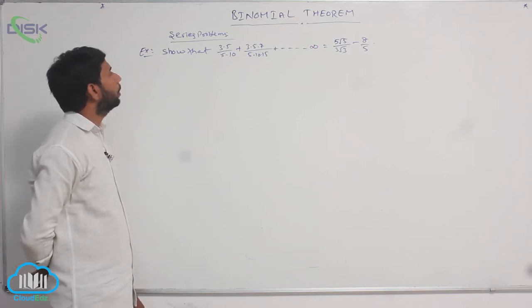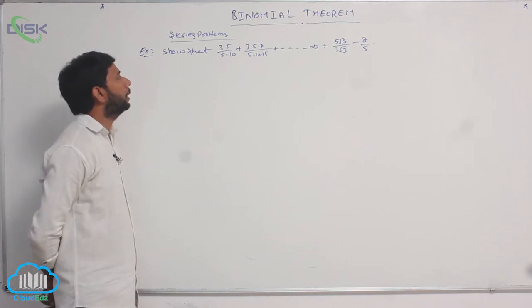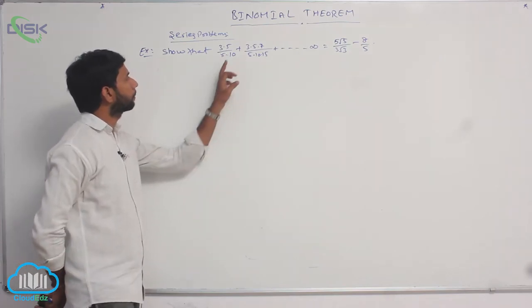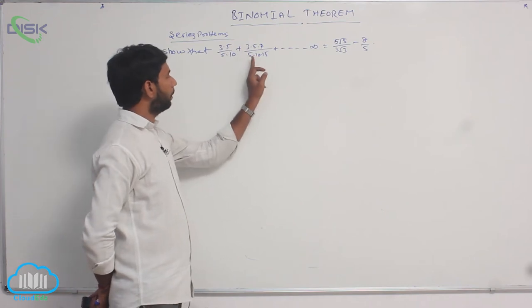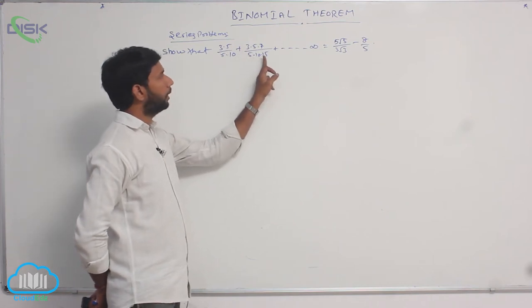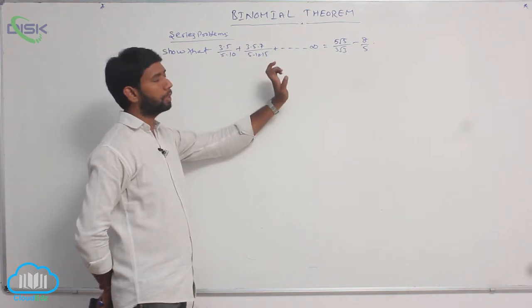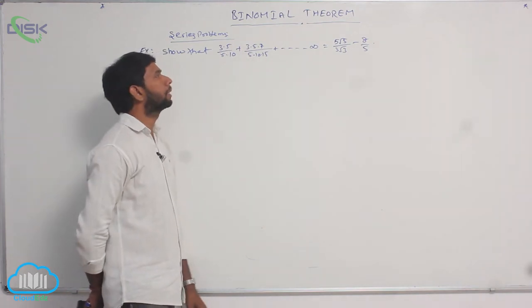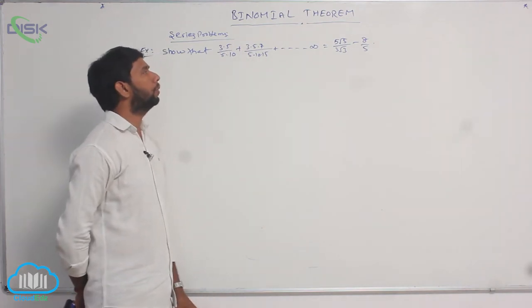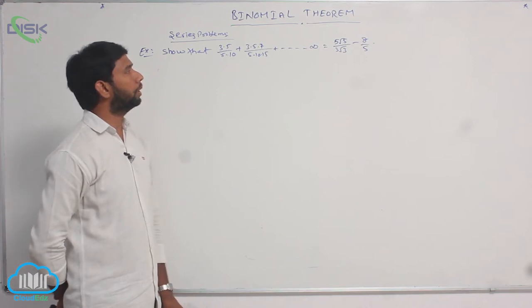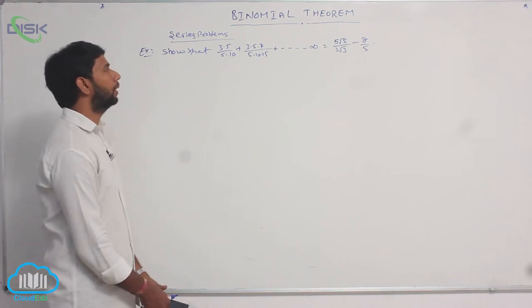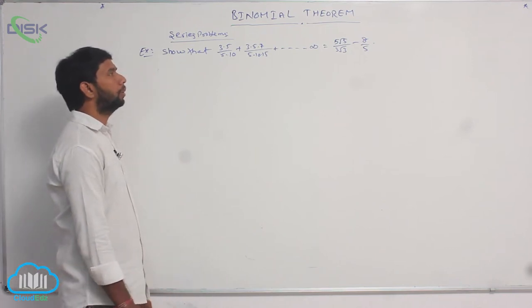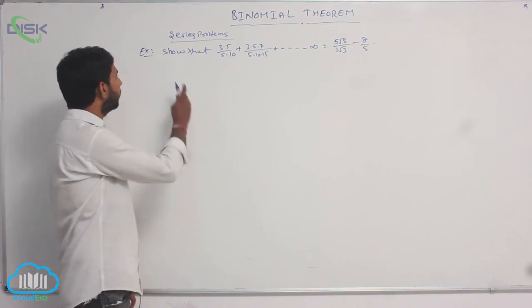Show that the value of the series 3·5/(5·10) + 3·5·7/(5·10·15) + ... up to infinity is equal to 5√5/(3√3) - 8/5.